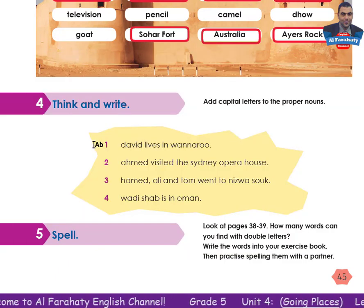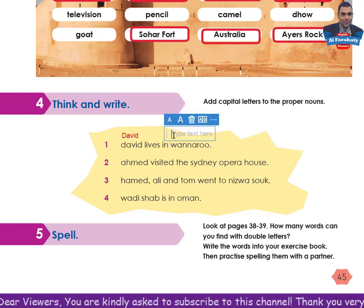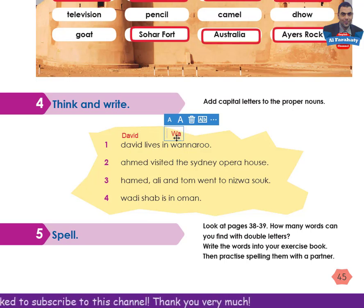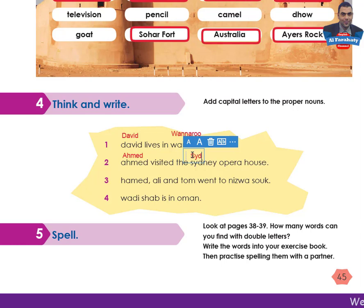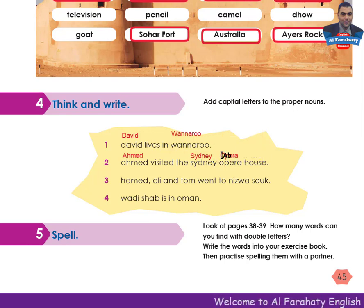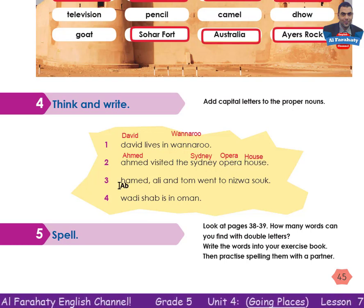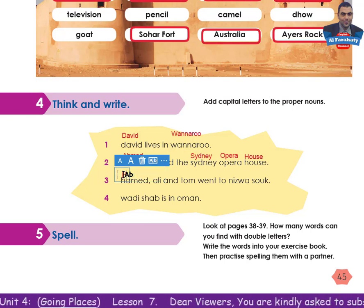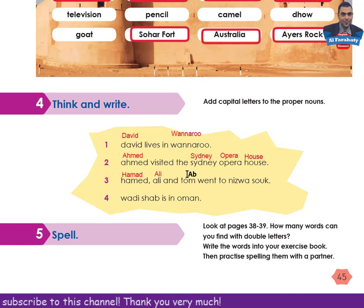Hello again. Number 1: David — capital D. Number 2: Sydney Opera House — capital letters because it is the name of a place. Number 3: Hamad — a proper noun, capital H. Ali — yes, a proper noun, capital A. And Tom — yes, these are names of persons, they are proper nouns.